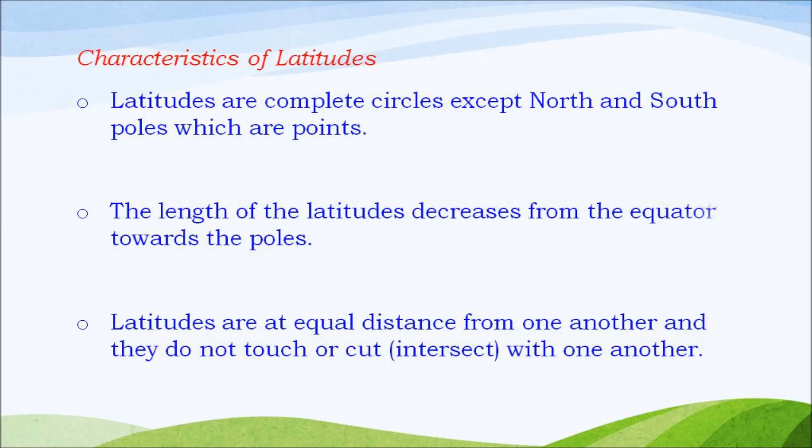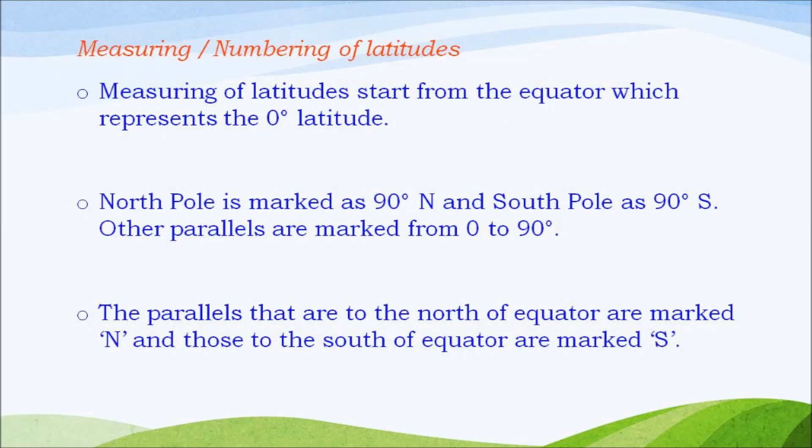Measuring of latitudes. Measuring of latitudes start from equator which represents 0 degree latitude. North pole is marked as 90 degrees N and south pole as 90 degree S. Other parallels are marked from 0 to 90 degrees. The parallels that are to the north of equator are marked N and those to the south are marked S.